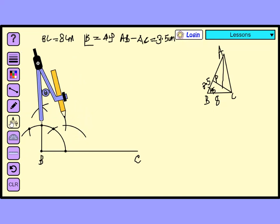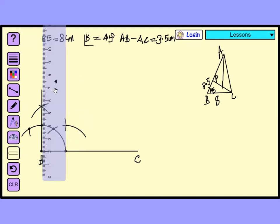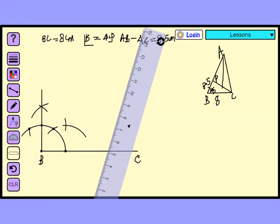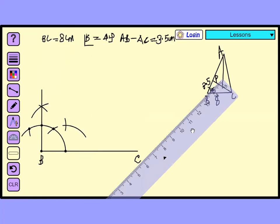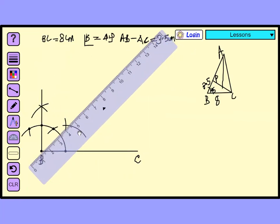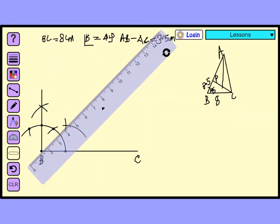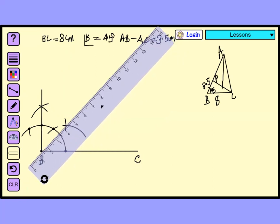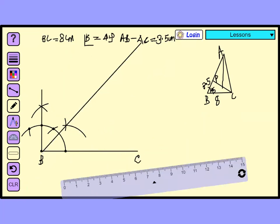This intersection point is 45 degree. Now, I'll take the scale. I'll join 45 degree. And then, from your, from that line, I'll cut 3.5.